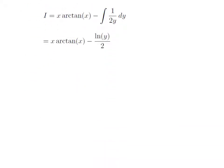This is a simple integration. Here, 1 by 2 is the constant, and the integration of 1 by y with respect to y is equal to the natural log of y. So I is equal to x into arc tangent of x minus natural log of y divided by 2. Since natural log of y divided by 2 is equal to natural log of the square root of y, I is equal to x into arc tangent of x minus natural log of the square root of y.